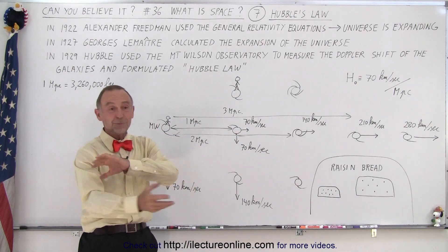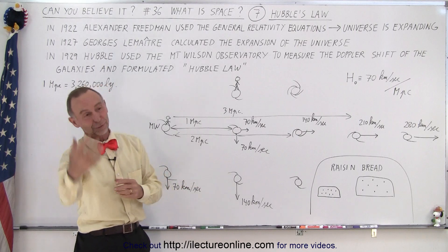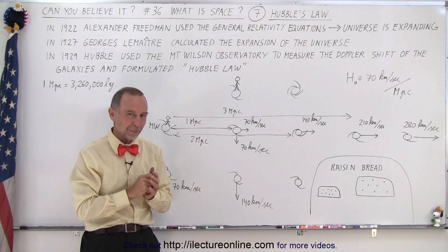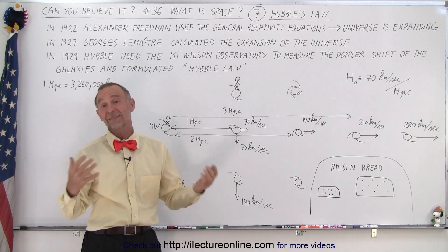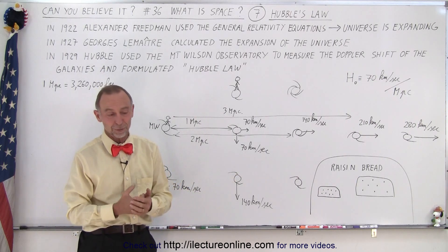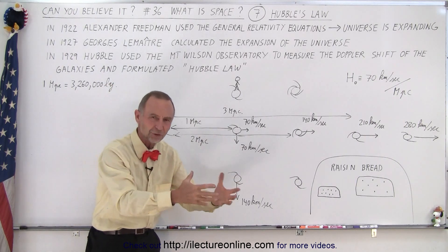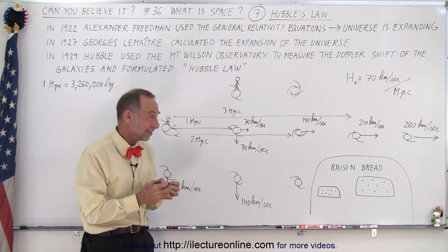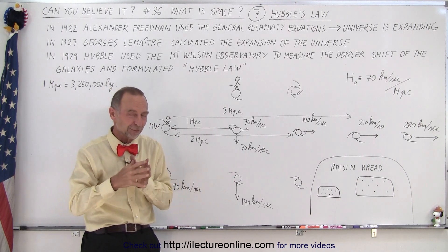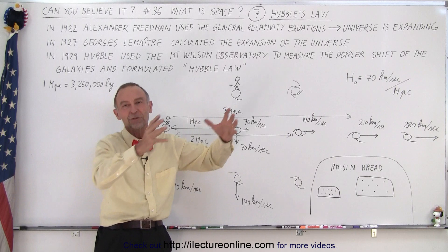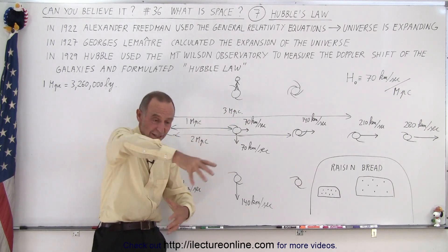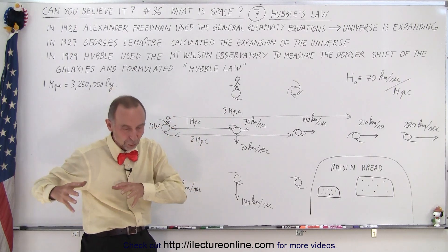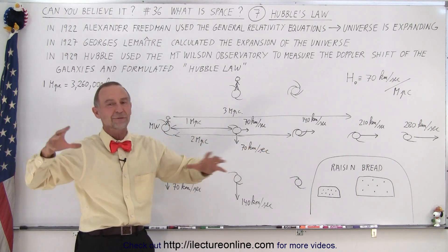Things are still moving within space — the Earth goes around the Sun, the Moon goes around the Earth, we can send rockets into space and move through it, although the speed at which we can move is limited by the speed of light. At the grand scale of the universe, galaxies are essentially moving away from each other because the space in between is expanding and the whole galaxy moves along with it, even though stars are rotating about the galactic center and everything else is in motion locally.